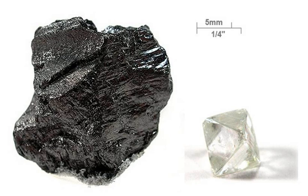Isotopes of carbon are atomic nuclei that contain 6 protons plus a number of neutrons varying from 2 to 16. Carbon has two stable, naturally occurring isotopes. The isotope carbon-12 forms 98.93% of the carbon on Earth, while carbon-13 forms the remaining 1.07%.